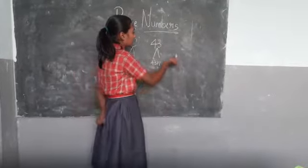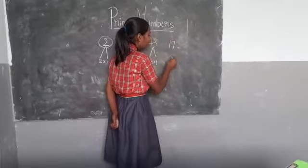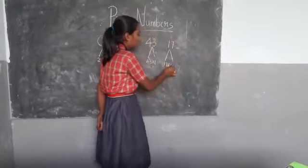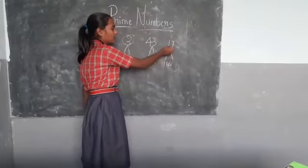Here again I am taking seventeen. Seventeen ones are seventeen. It will also come in only seventeen table. So it is also a prime number.